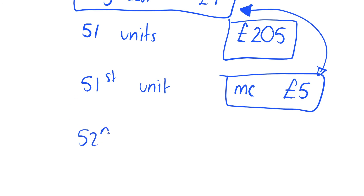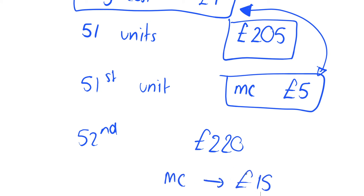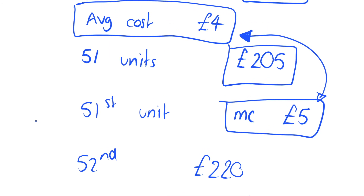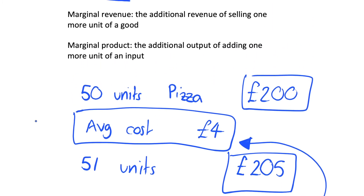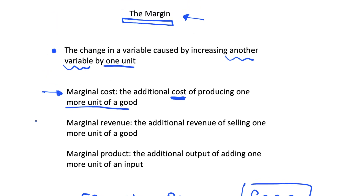And if we go on to our 52nd pizza that we're producing, and it costs us £220 to produce 52 pizzas, we'll notice that the marginal cost is now going to be £15 to produce that pizza. So we're going to maybe not want to produce our 52nd pizza because it's very expensive. Why does marginal cost change? Well, it may be because we have to buy new equipment, because our equipment is only set up to produce 50 or 51 pizzas, so the marginal cost is increasing. Maybe we don't have enough space, so we're going to have to spend money a different way.